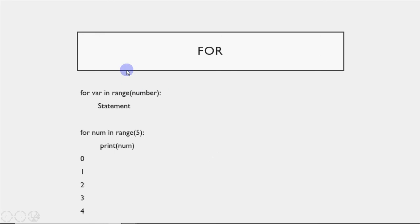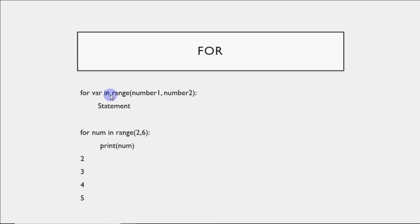I'll be using one variation of for in this video — that is when we use range in the for loop. There are other options used when you work with lists, arrays or dictionaries, which we'll cover once we've done lists. But right now we're just going to have the basic for loop used with range.